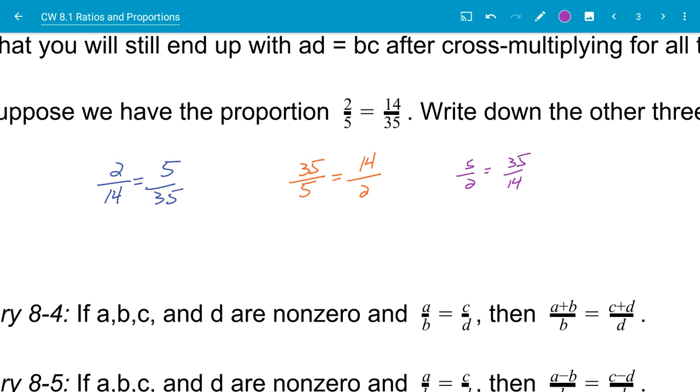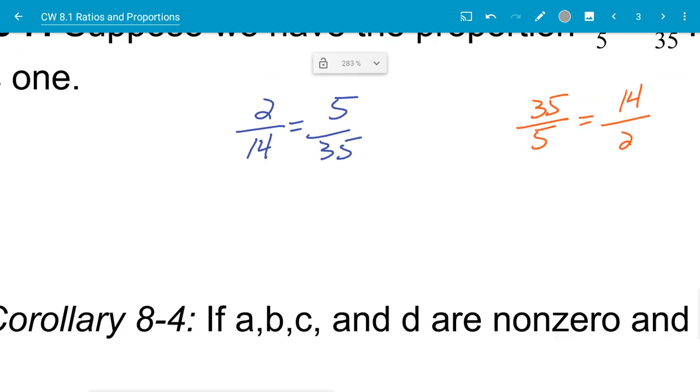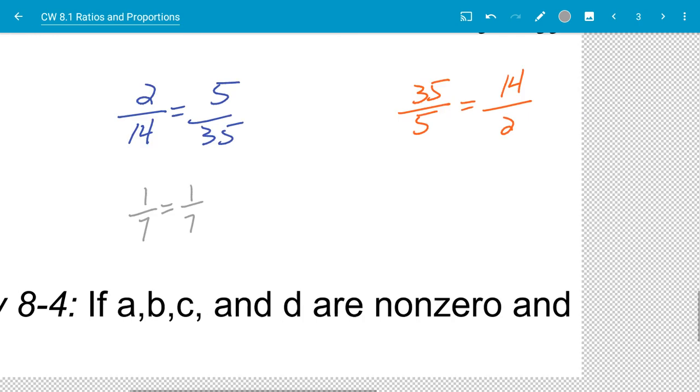Now, if you wanted to see that these were correct and still hold true, what you could do is you could just reduce both fractions. So 2 over 14 is the same thing as 1 over 7 because I can divide both by 2. And 5 and 35, I can divide both by 5. And that gives me 1 over 7. You see the proportion is still true.